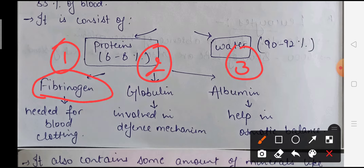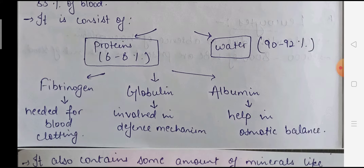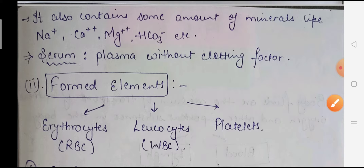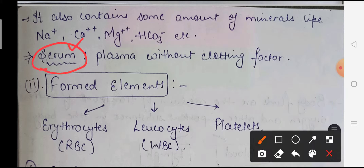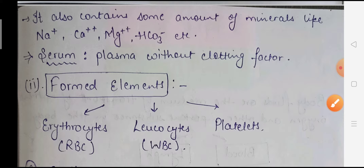Fibrinogen is normally present in inactive form; its inactive form is called fibrinogen, and when it converts to active form it is called fibrin. Fibrinogen helps in blood clotting. Globulin is involved in the body's defense mechanism - it helps kill foreign invaders. Albumin helps maintain osmotic balance. Plasma also contains minerals like sodium, calcium, magnesium, and carbonates. An important term: plasma without clotting factors is known as serum.